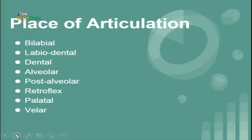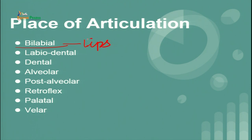Now we will talk about the place of articulation of consonants. Bilabial sounds involve the lips — you try to release air, but there is a blockage or closure. The lips are responsible for restricting the air coming from your lungs. If you try to produce the 'p' sound, you will see that your upper and lower lip come into contact with each other; as a result, the air is obstructed and stopped for a while, and then you suddenly release it to produce the sound.